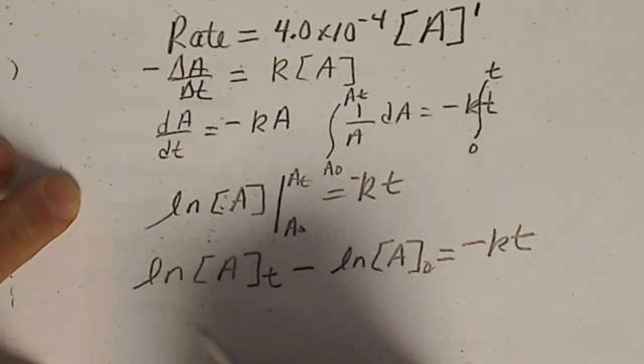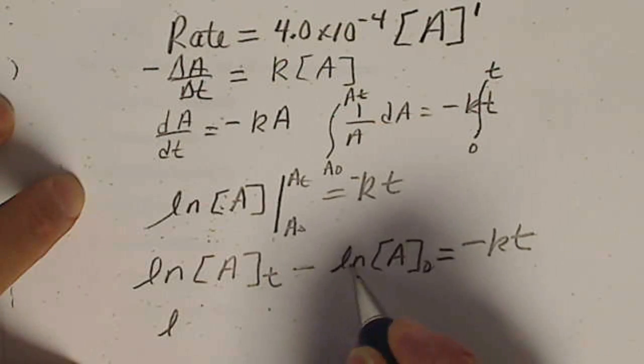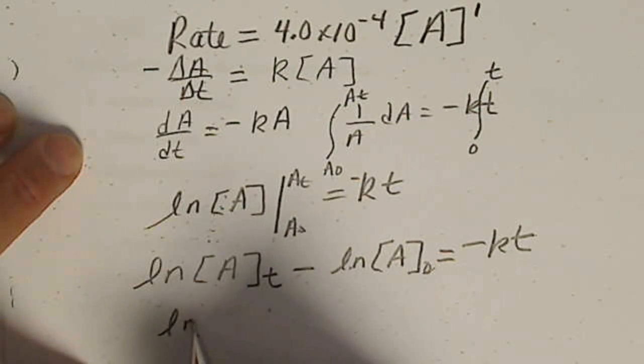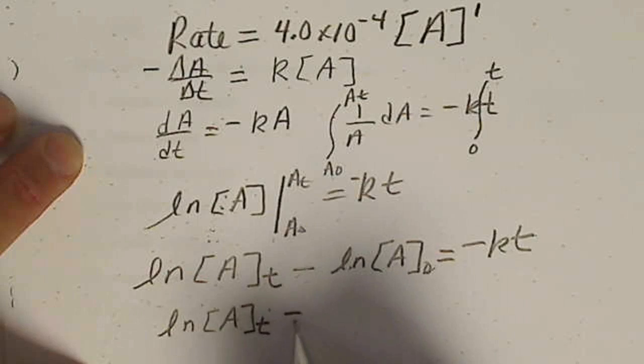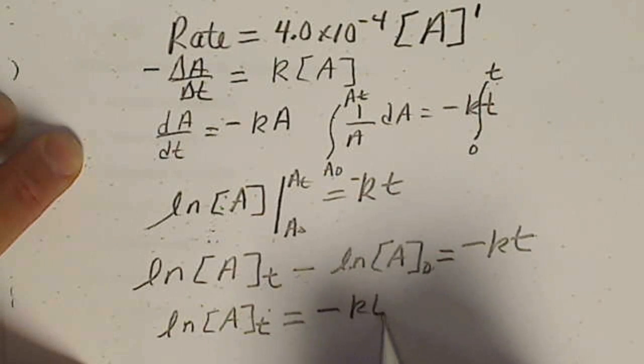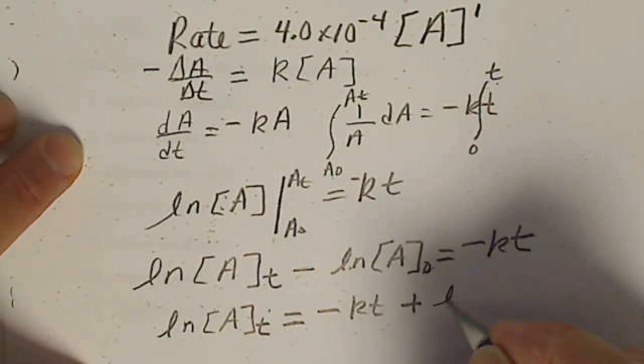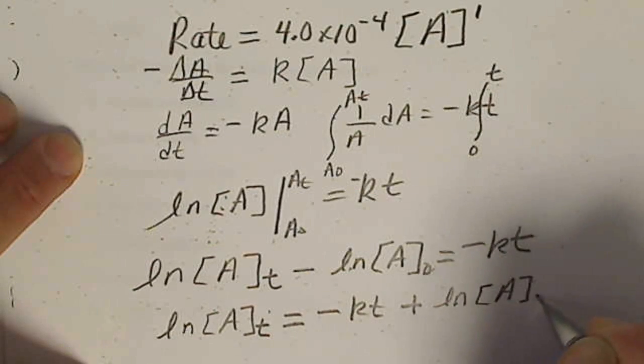So we rearrange this and we get the natural log of A at any time T minus the natural log of the initial concentration equals negative K T. And the form we usually use in the book is we just put this term on the other side.